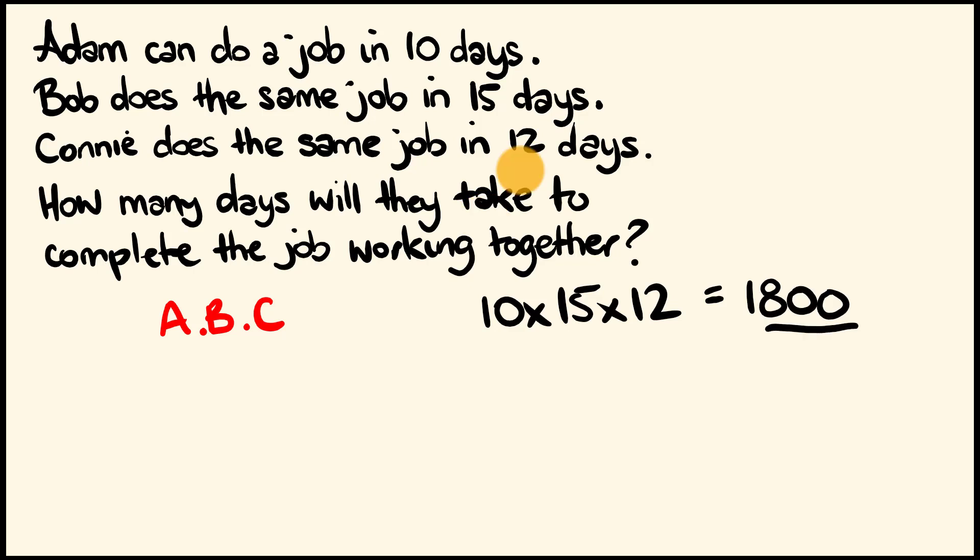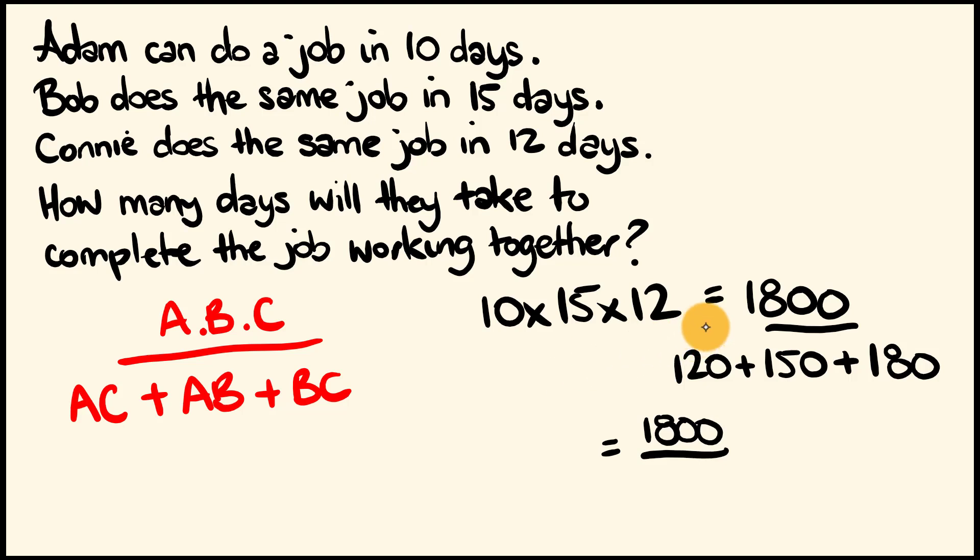That's all going to be divided by, like before, we just tweak what we were doing before. So, first off, A is going to be multiplied by C. We're going to add that to A being multiplied by B. And then we have B being multiplied by C. So, you can see that pattern there. It's a nice, simple one. So, let's do that. A multiplied by C. We have 10 multiplied by 12 is 120. We have A multiplied by B. 10 multiplied by 15 is 150. And finally, we have B multiplied by C. 15 multiplied by 12. That is 180. So, this leaves us with 1,800 divided by, well, 120 plus 150 is 270. Plus 180 is 450. So, 1,800 divided by 450, this would take them all working together four days.